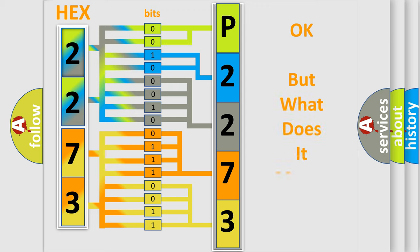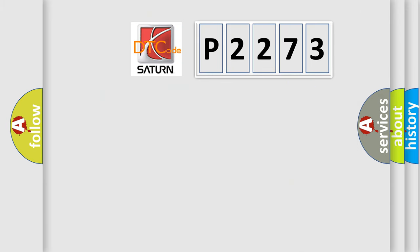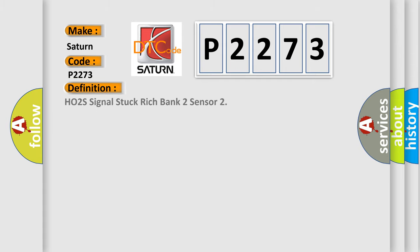The number itself does not make sense to us if we cannot assign information about what it actually expresses. So, what does the diagnostic trouble code P2273 interpret specifically for SAT and car manufacturers? The basic definition is H02S signal stuck rich, Bank 2 Sensor 2.